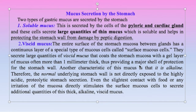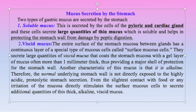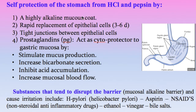This viscous mucus layer provides a major shell of protection for the stomach wall. Another characteristic is that this mucus is alkaline — it contains bicarbonate ions in order to neutralize the effect of hydrochloric acid — so the normal underlying stomach wall is not directly exposed to the highly acidic proteolytic stomach secretion. Even slight contact with food or any irritation of the mucosa directly stimulates these mucous cells to secrete additional quantities of this thick alkaline viscous mucus.